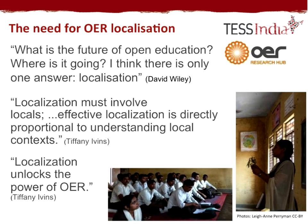Nearly ten years ago, David Wiley identified localisation as crucial to achieving the aims of open education — he called it the future of the movement. More recently, Tiffany Ivins claimed that localisation unlocks the power of OER. Yet localisation remains absent from many OER policies at national and institutional level. Without localisation, resources produced in different cultural contexts can appear irrelevant and inaccessible to end users.